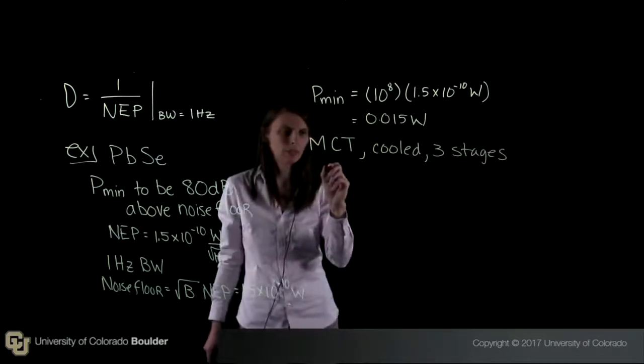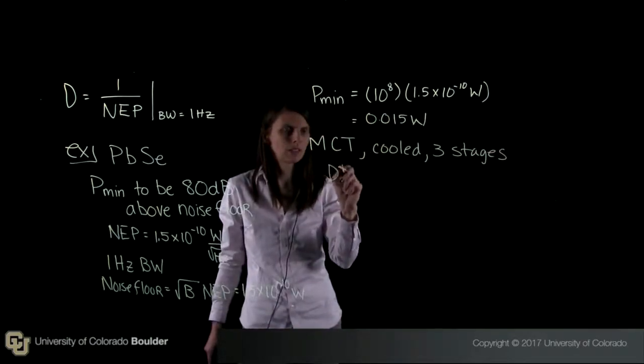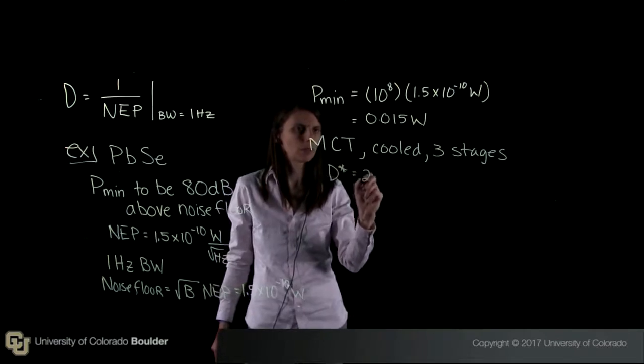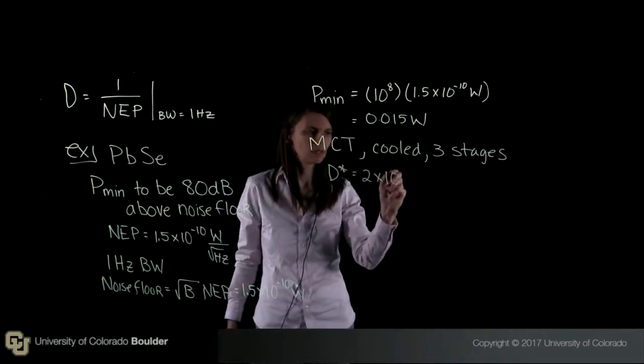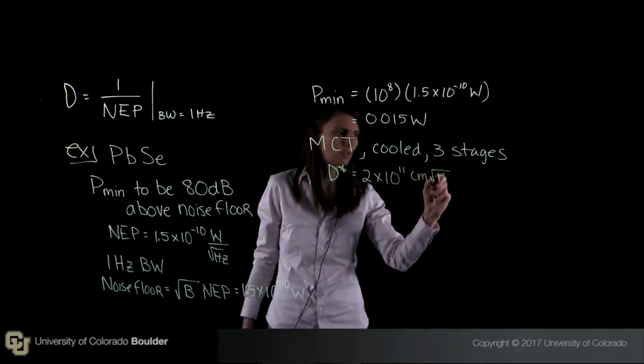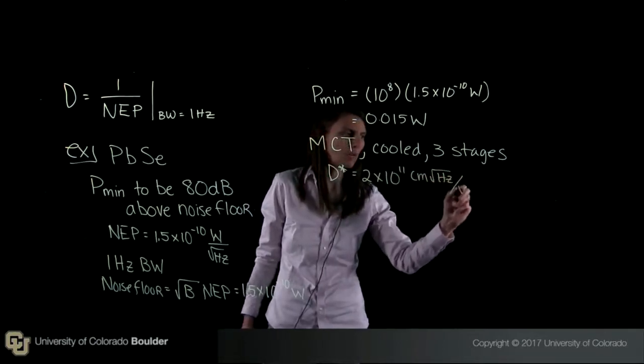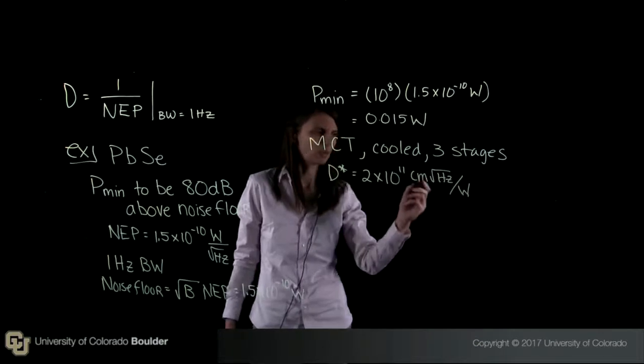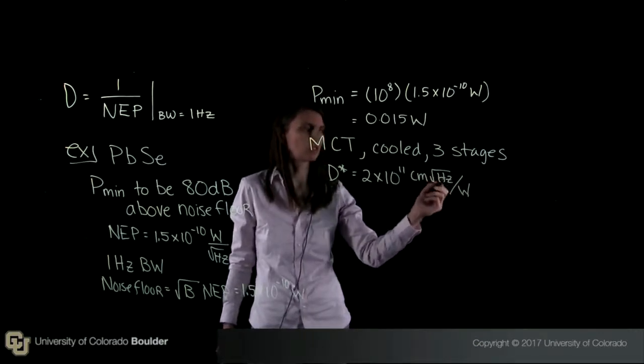So here we end up with a detectivity d star that's equal to 2 times 10 to the 11 centimeters per root hertz per watt. Okay, so this is centimeters times root hertz per watt.